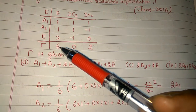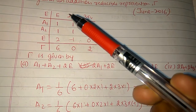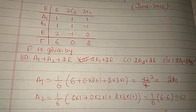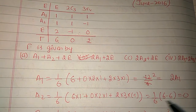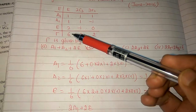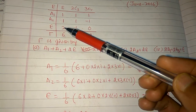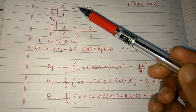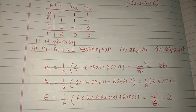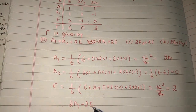For A2, we multiply 6 with 1, 0 with 1, and 2 with −1 and coefficient 3, giving 6 − 6 = 0, so 0/6 = 0. For E, we multiply 6 with 2, 0 with −1 and 2, and 2 with 0 and 3, giving 12/6 = 2, so twice E.